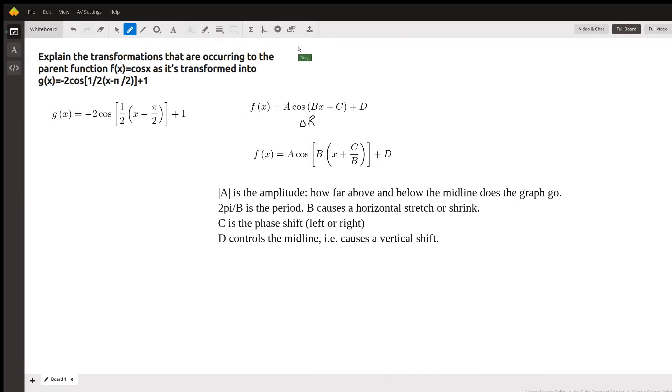Okay, the best way to explain this is to go to Desmos and actually show you a specific example. But just real quickly, the letters that are usually associated with the numbers negative 2, 1/2, negative π/2, and 1 are A, B, C, and D.